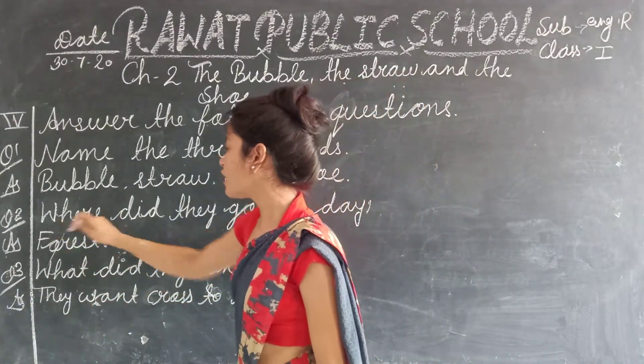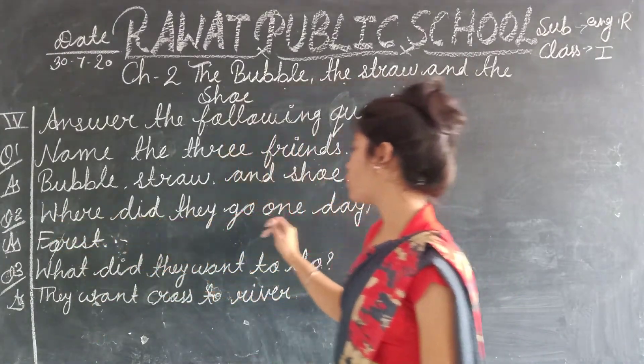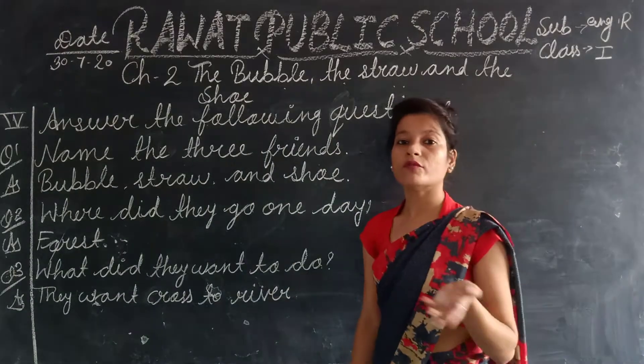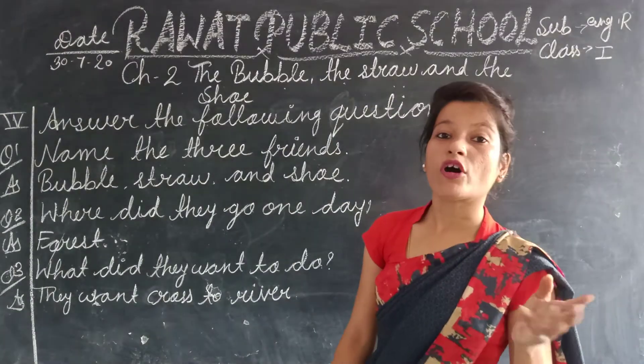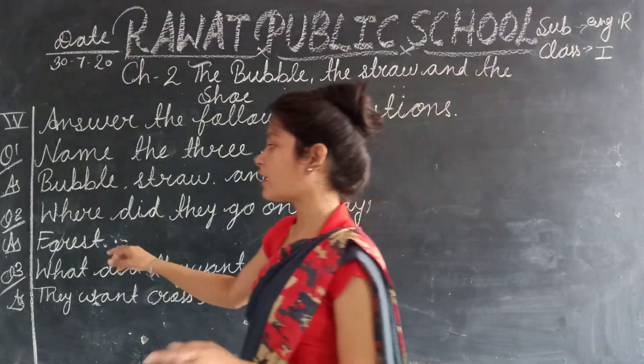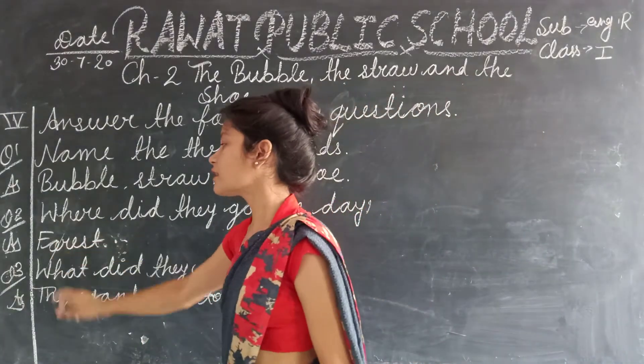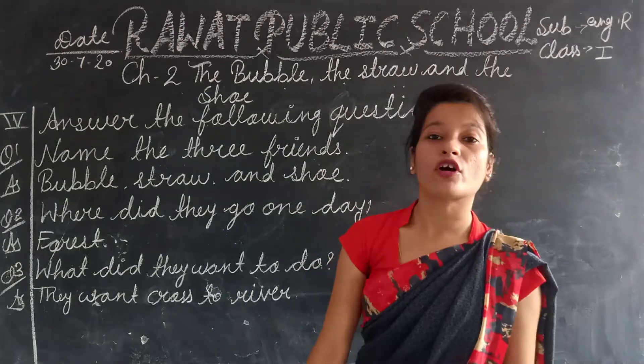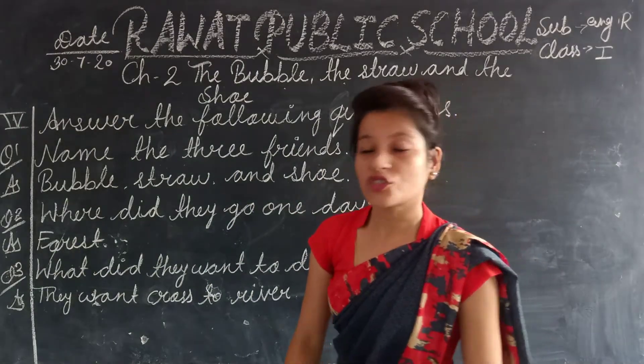Second question: where did they go one day? Where did they go? Forest. Forest means jungle. The answer is: they went to the forest.